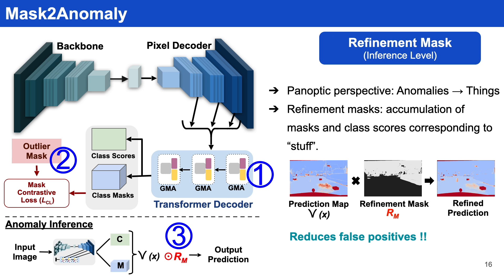At the inference level, we introduce a refinement mask. The idea of the refinement mask stems from a panoptic perspective, where we hypothesize anomalies as things. Using this hypothesis, we construct the refinement mask, which is an accommodation of all the masks and class scores that correspond to stuff. Once the refinement mask is constructed, we multiply it to the prediction map to get the refined prediction, having reduced false positives.